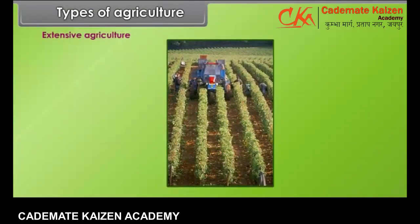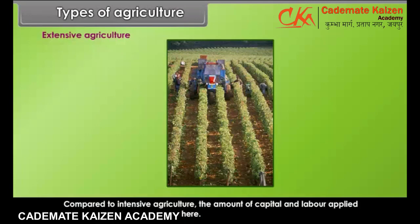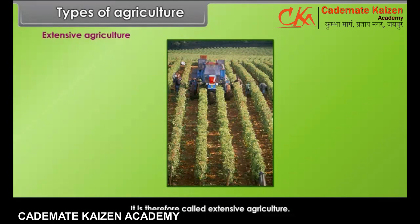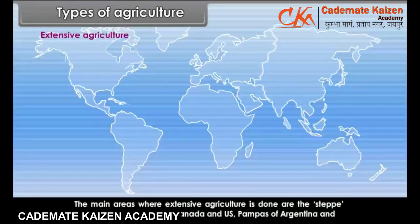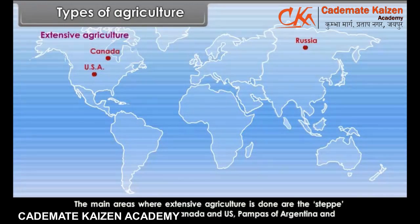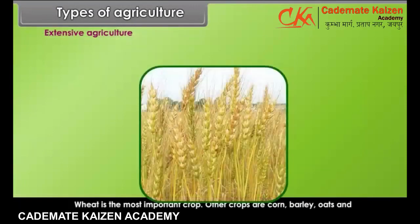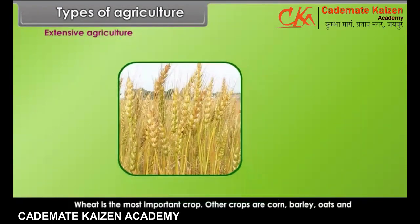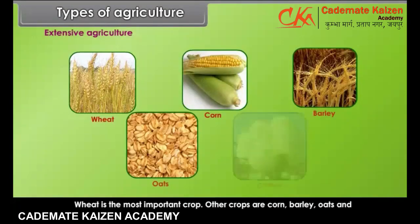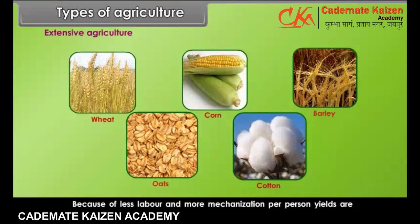Extensive agriculture: compared to intensive agriculture, the amount of capital and labor applied per unit area is relatively small. The main areas where extensive agriculture is done are the steppe lands of Russia, prairies of Canada and US, pampas of Argentina and downs of Australia. Wheat is the most important crop. Other crops are corn, barley, oats and cotton. Because of less labor and more mechanization, per person yields are quite high.